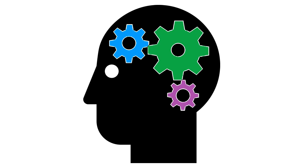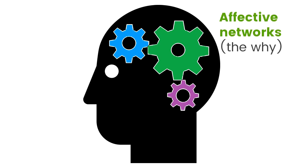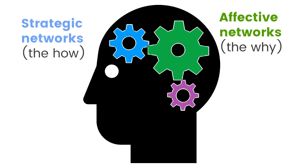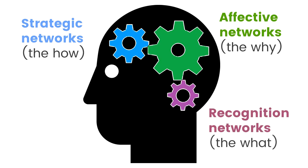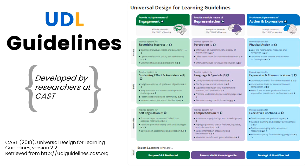The central networks in this image are the affective networks — they are related to caring about why we are learning. At the front, we can see the strategic networks, or how we're going to go about learning, and towards the back are the recognition networks, where we recognize what we're learning. These three principles from UDL come along with guidelines that can be helpful when looking at how we're going to provide choice when we design our learning environments and learning situations.